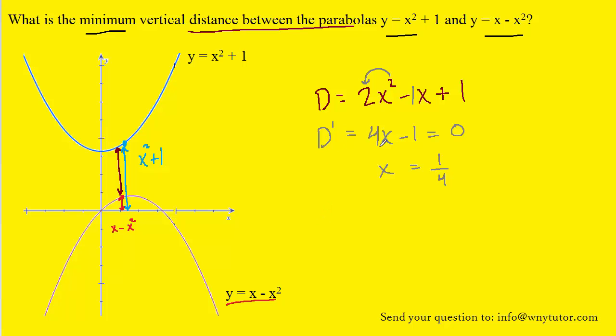So building off of the first derivative, which was 4x minus 1, we could calculate the second derivative as simply equaling positive 4. Now a positive second derivative means that the function is concave up. That is the distance function.